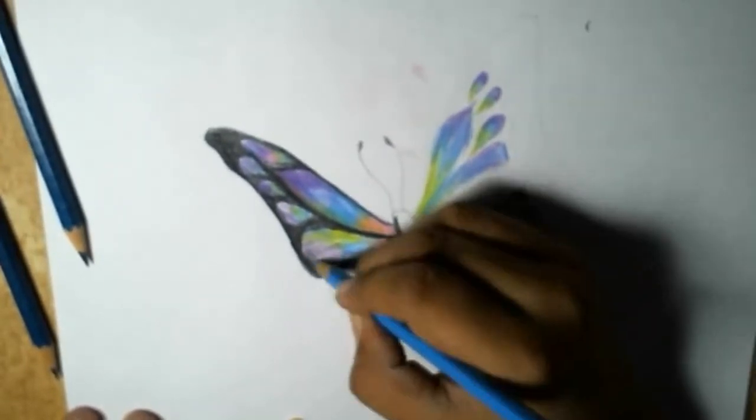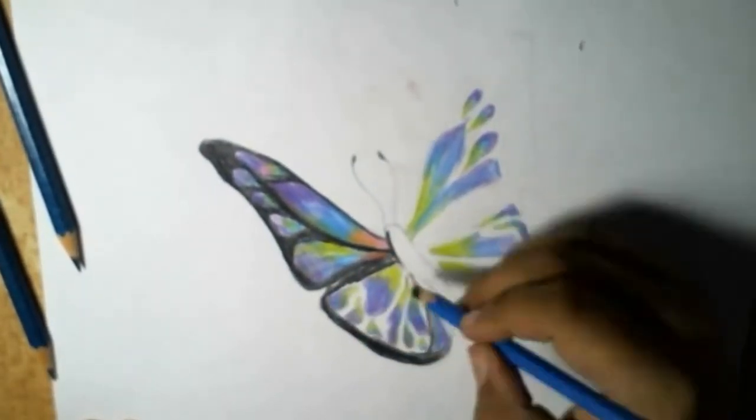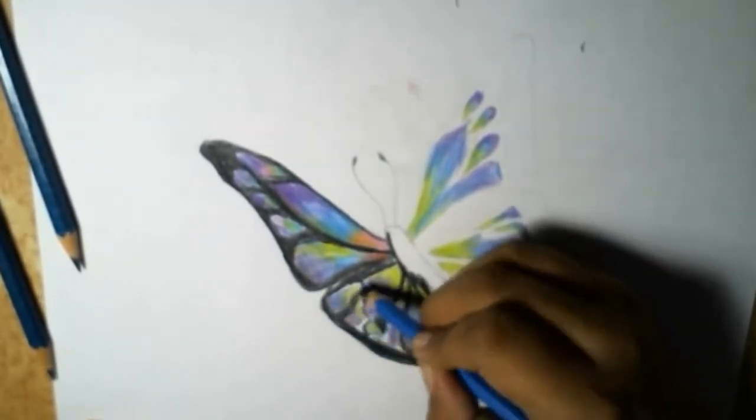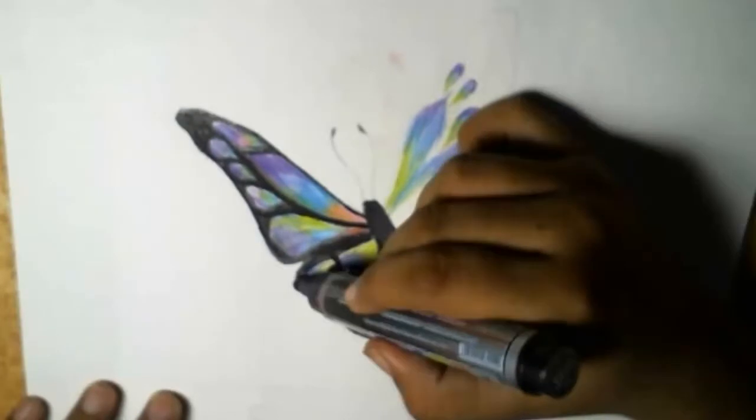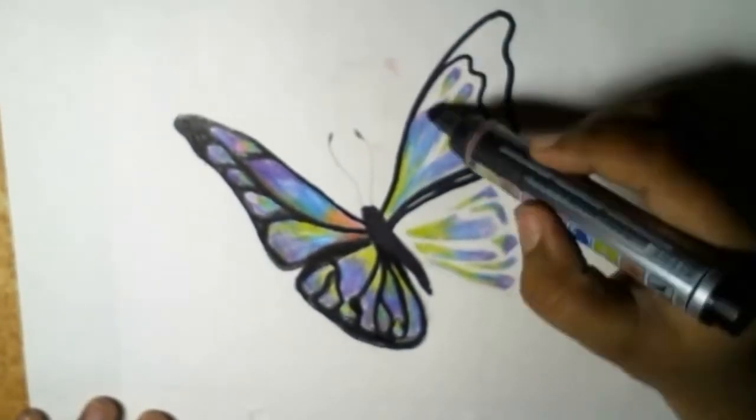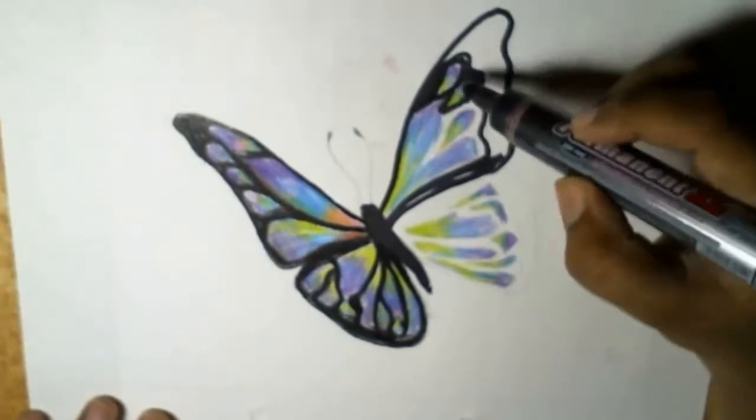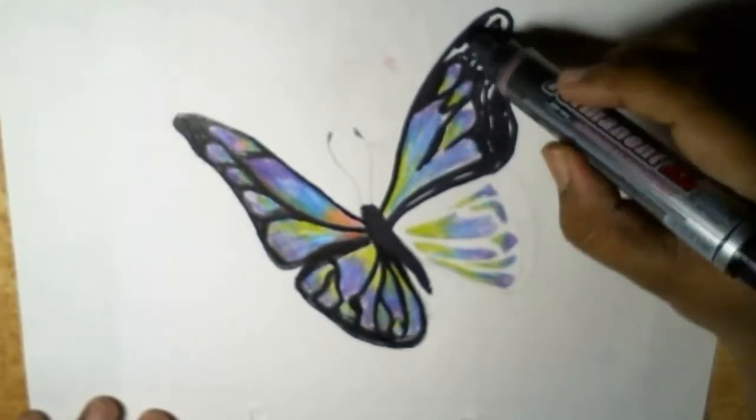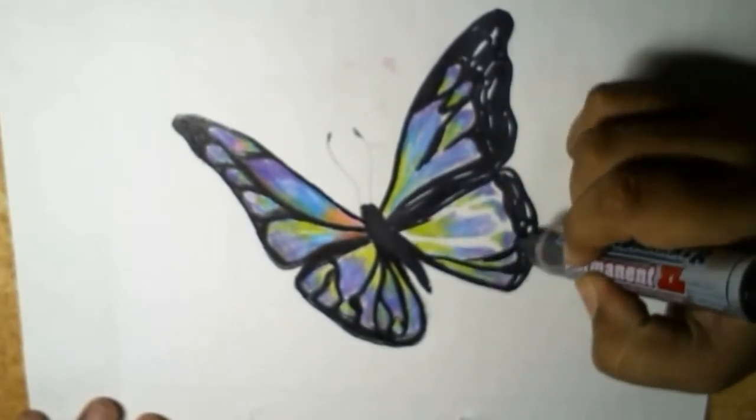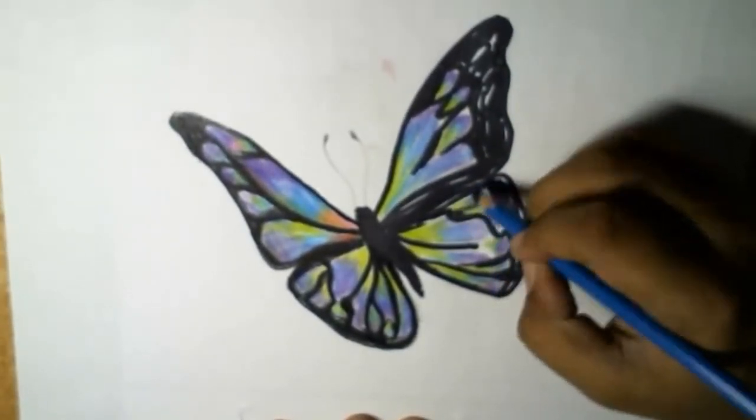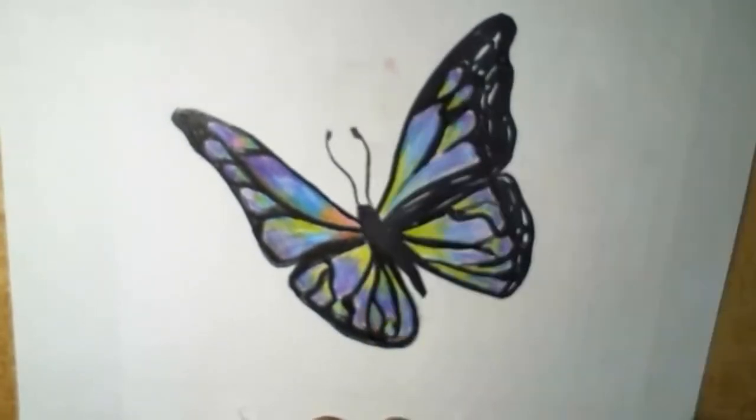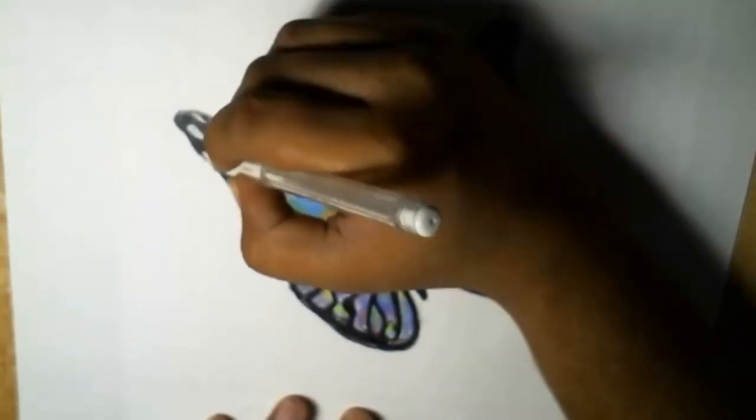Drawing is a form of visual art in which a person uses various drawing instruments to mark paper or another two-dimensional medium. Instruments include graphite pencils, pen and ink, ink brushes, wax color pencils, crayons, charcoal, chalk, erasers, markers, styluses, various metals such as silver points, and electronic drawing.